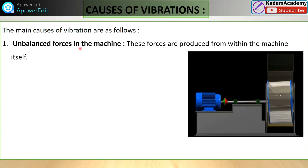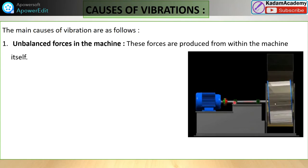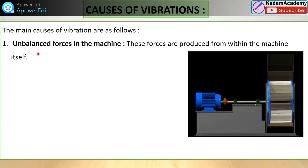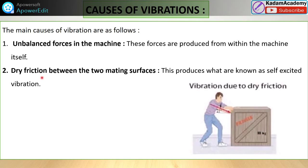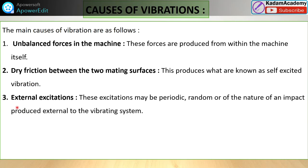What are the main causes of vibration? First, unbalanced forces in the machine — these forces are produced within the machine when components like couplings, bearings, or drums are not properly attached, creating vibration. Second, dry friction between two mating parts — for example, surfaces in contact can produce vibration due to dry friction.